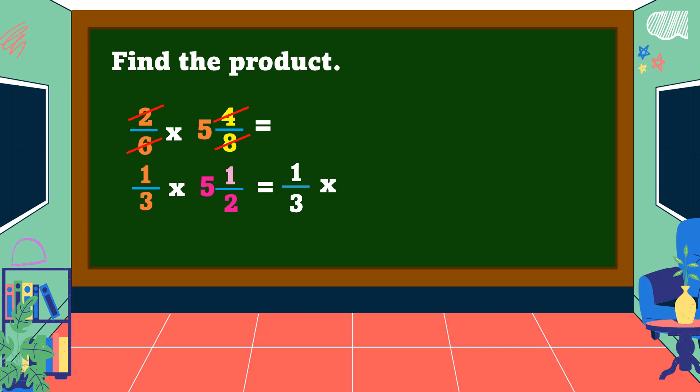Copy the denominator two. Next, multiply both numerators and both denominators: one times eleven is equal to eleven, and three times two is equal to six. What kind of fraction is eleven over six? Yes, it is an improper fraction.